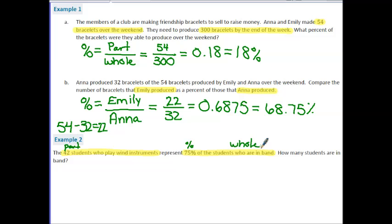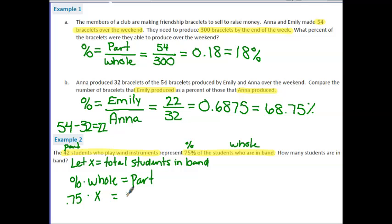And the students who are in band is going to be our whole. Now, they didn't tell us this number, so this is the one we're going to try and find. So let's start with a let statement, let X equal the total students in band. So let's start with our formula, percent times whole equals part. And we can fill in the pieces we know. The percentage we know is 75%, so as a decimal, this is 0.75. The whole in this case we just defined as being X. And the part we identified as 42.